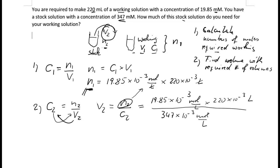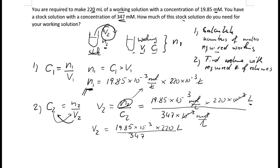The mole-per-liter units cancel out, which is good, and we are left with the unit liters. So the volume of the stock solution equals 19.85 times 10 to the minus 3 times 220, with units of liters, divided by 347. Putting that into a calculator gives approximately 0.01258 liters.